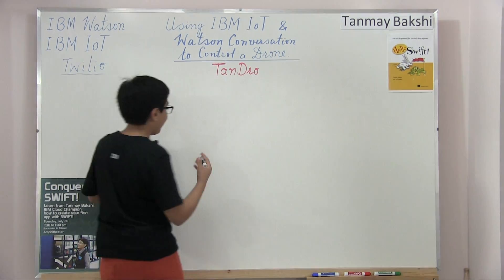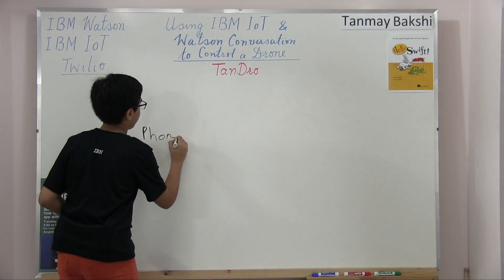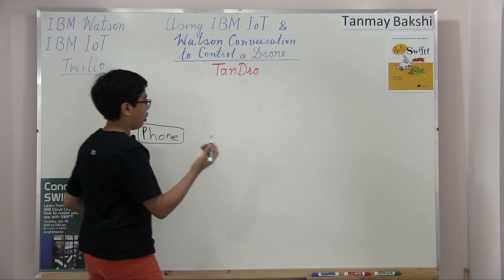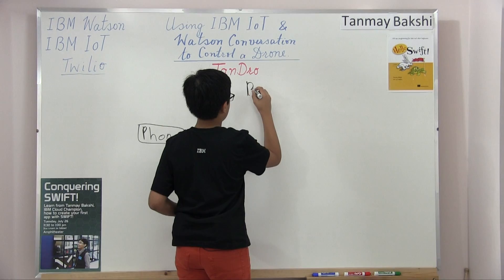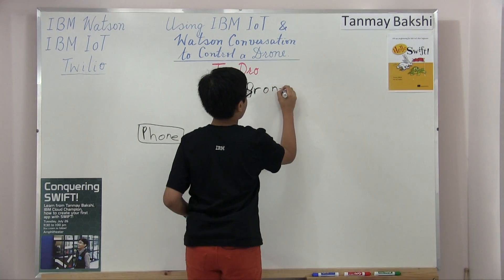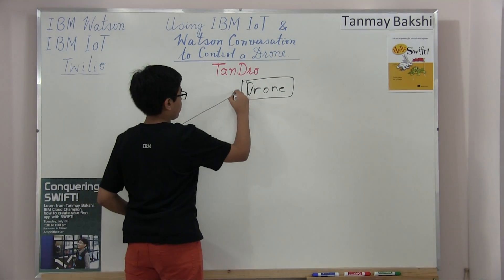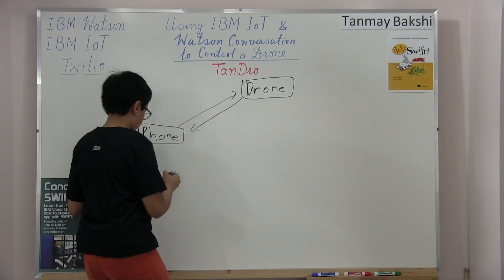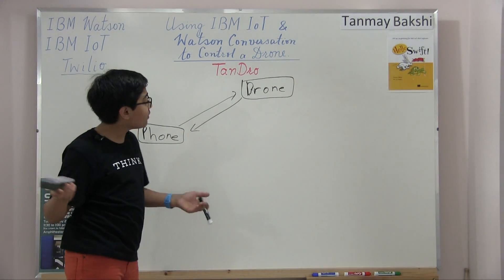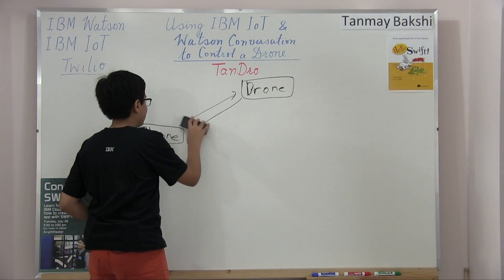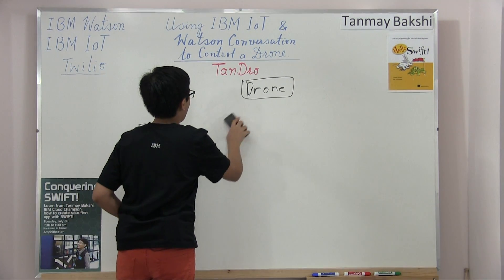We have a phone that's able to send commands, and our eventual goal is to communicate between the phone and the drone. We can't do that directly — that's almost impossible unless you install the AR Free Flight app, but that's too simple. Let's say we wanted to create our own little API for this.